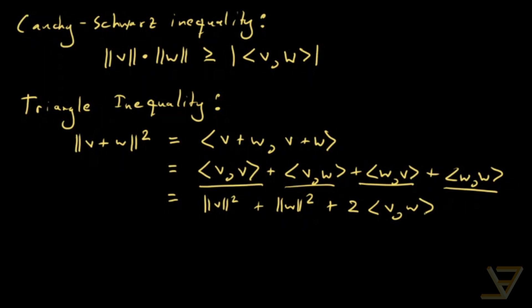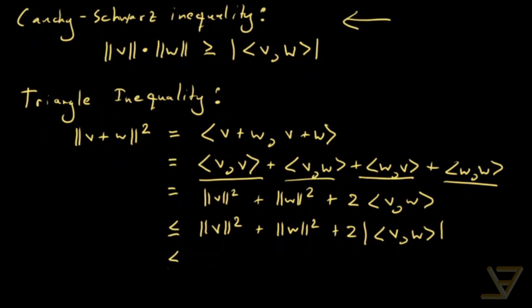Now we use the absolute value, so we get this is less than or equal to ||v||² + ||w||² + 2|⟨v, w⟩|. Now we use the Cauchy-Schwarz inequality from earlier, and this is less than or equal to ||v||² + ||w||² + 2||v|| · ||w||.